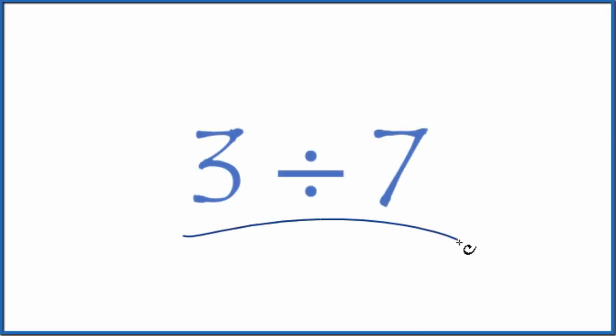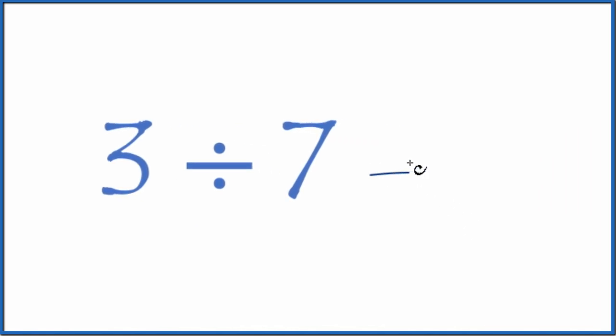Alright, let's divide 3 by 7. The first way I like to think about this is as a fraction. We would have 3 over 7. That's the same thing as 3 divided by 7.